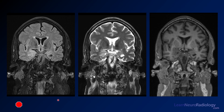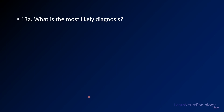Now in the coronal images, maybe you can see that a little bit better. You have a coronal FLAIR, coronal T2, and coronal T1. Again, maybe you see a little bit something there. Your question is: what's the most likely diagnosis in this case?